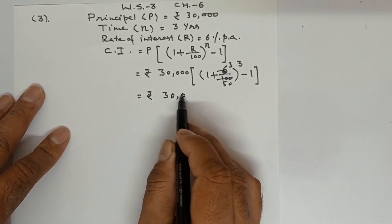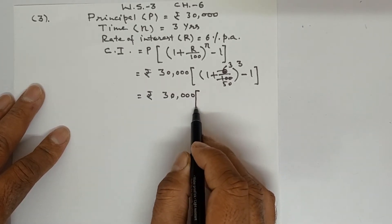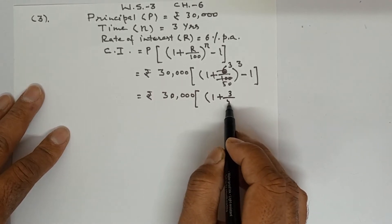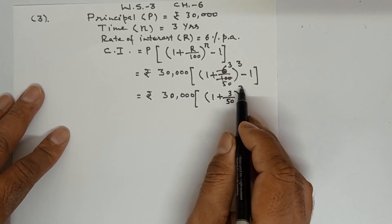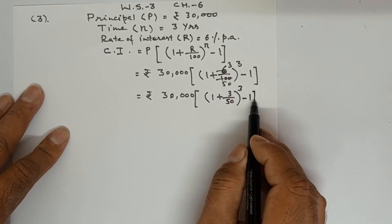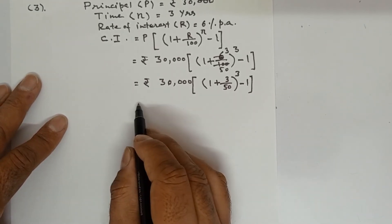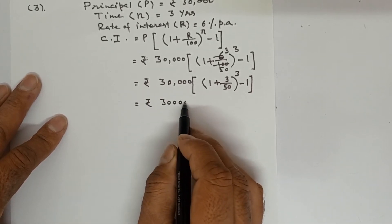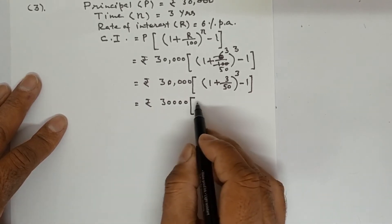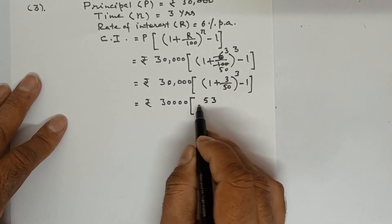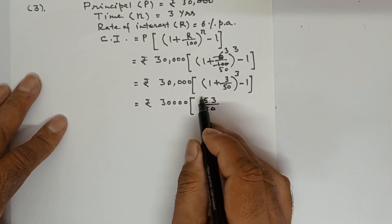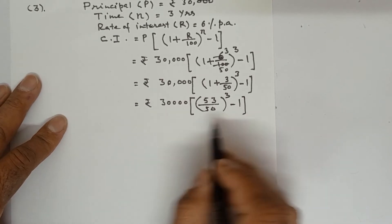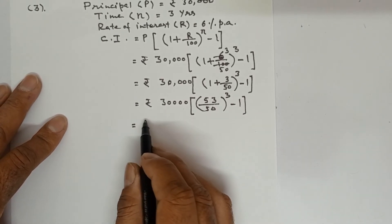So we will cancel out. Rs. 30,000 into 1 plus 3 upon 50 power 3 minus 1. Now further Rs. 30,000 into 50 plus 3 is 53 upon 50 power is 3 minus 1.